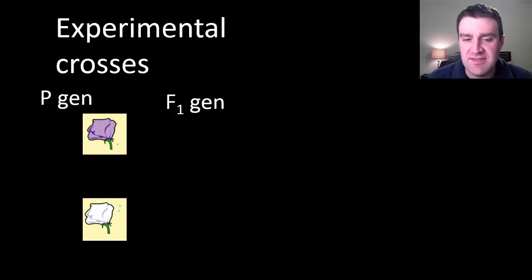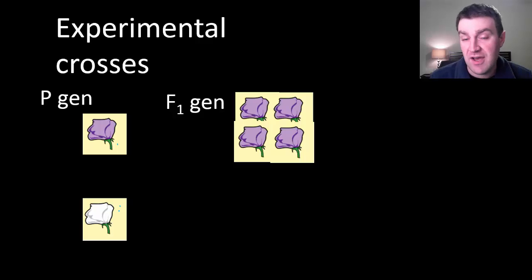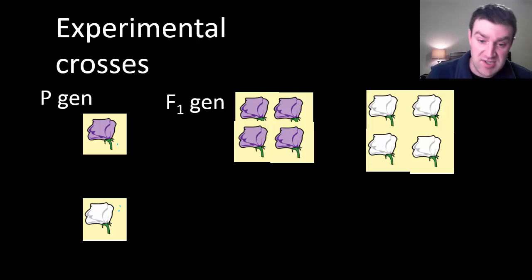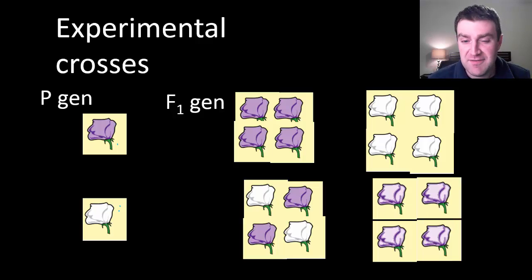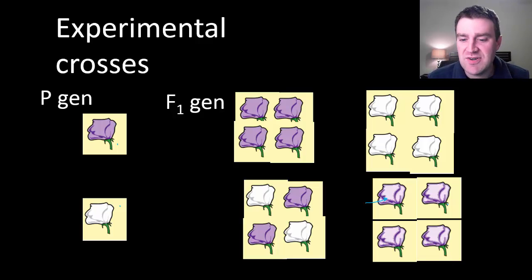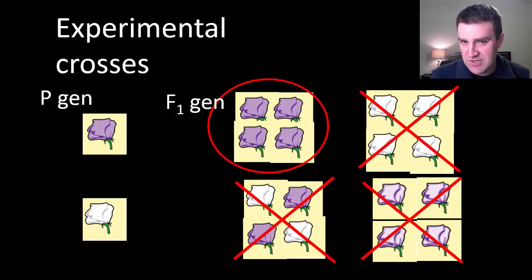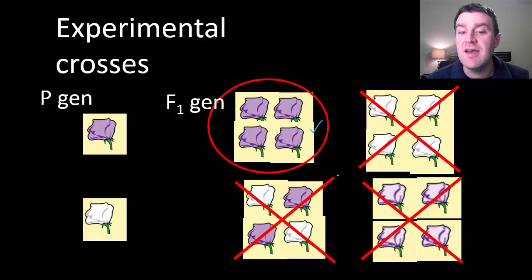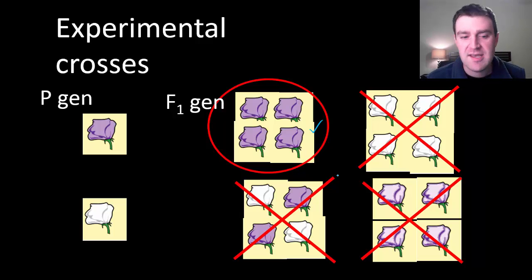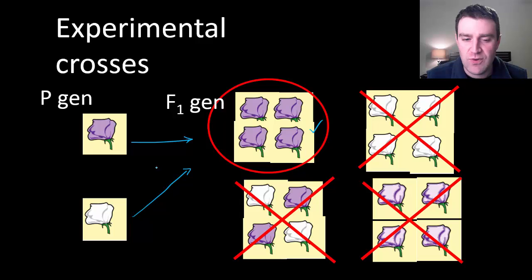You might expect various results — all purple, all white, some of each, or maybe a lavender mixture. As it turns out, none of those other options happened. They always came out purple every time he ran the experiment. It seemed as if purple completely dominated white. But this raised the question: what happened to the contribution of the white plant?